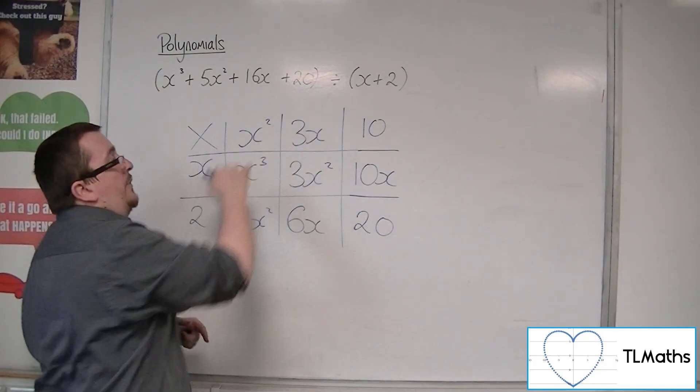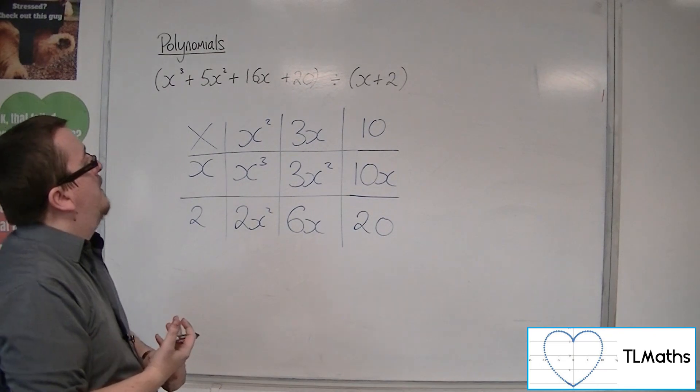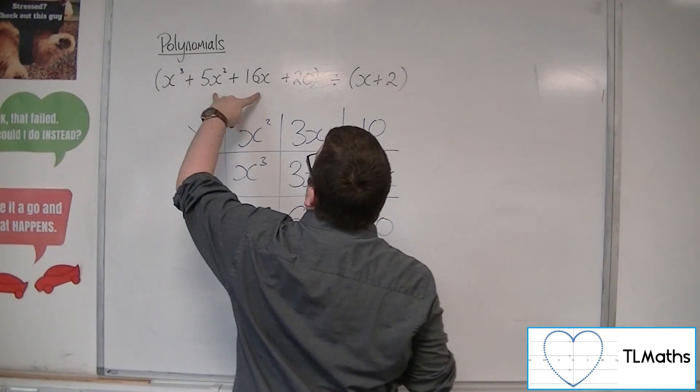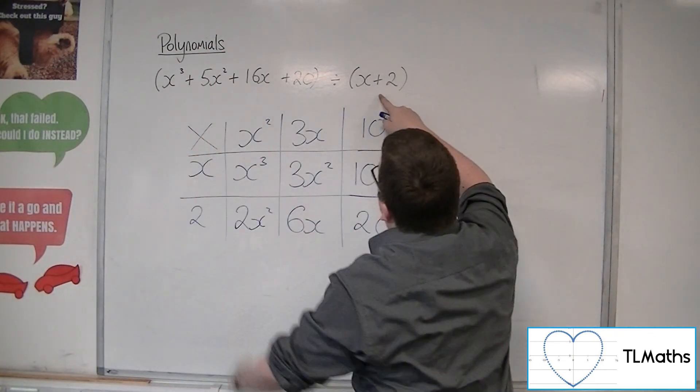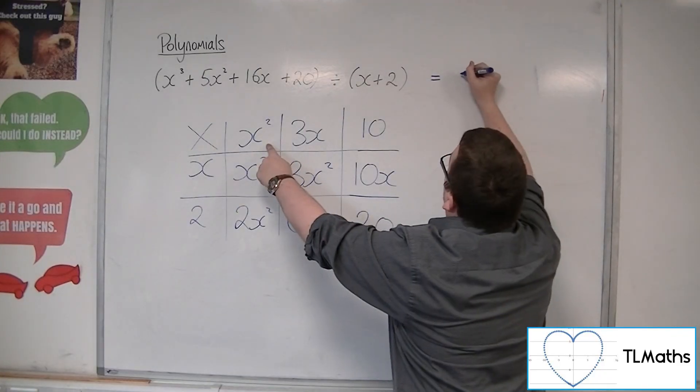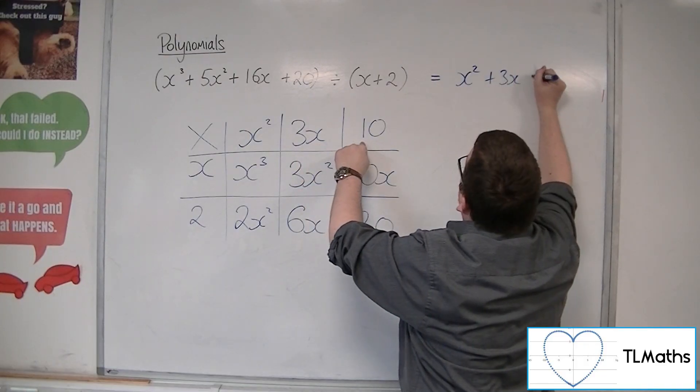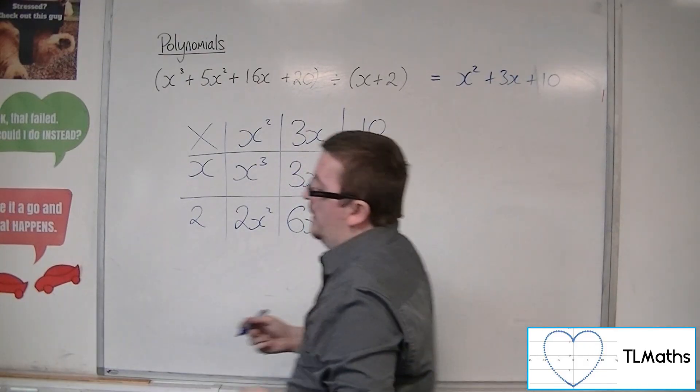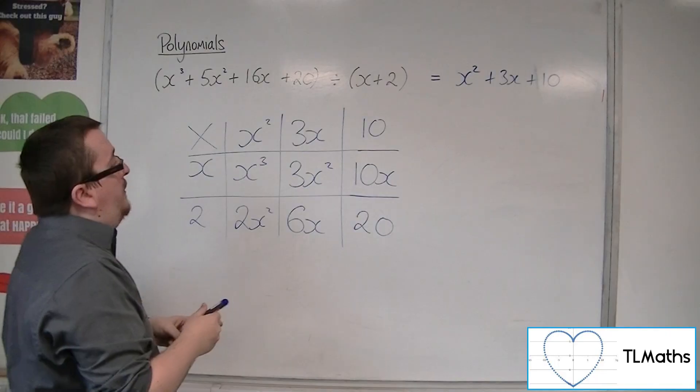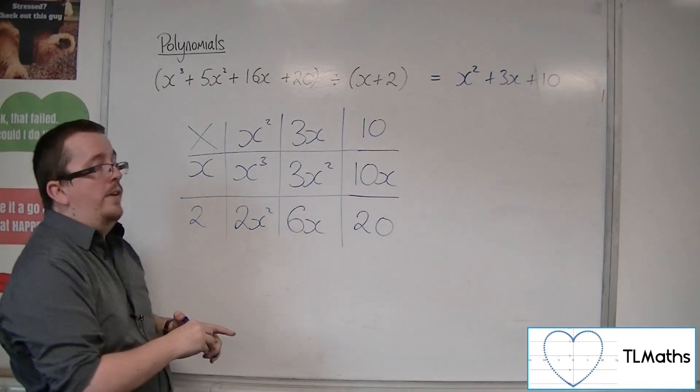Do I want 20? Yes, I do. So, if I divide this polynomial by x plus 2, I actually get x squared plus 3x plus 10. And that is the grid method in action.